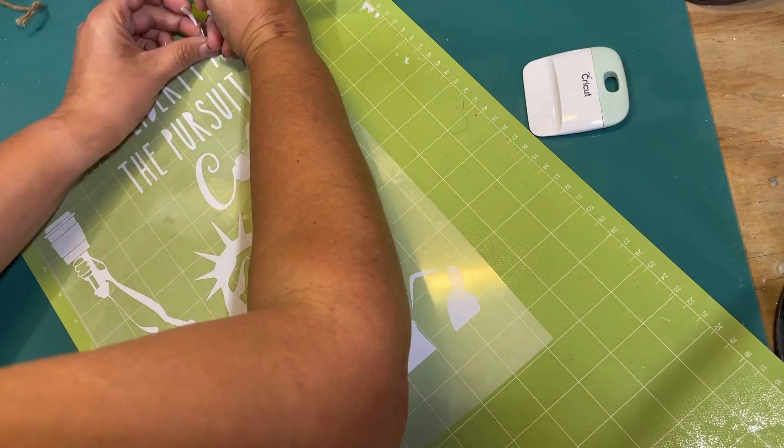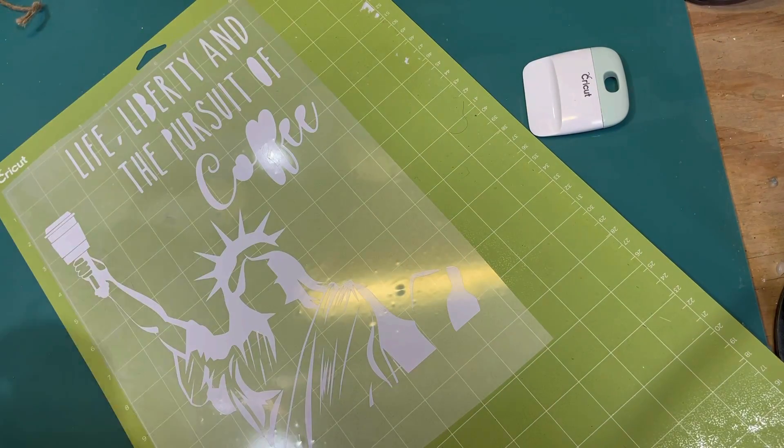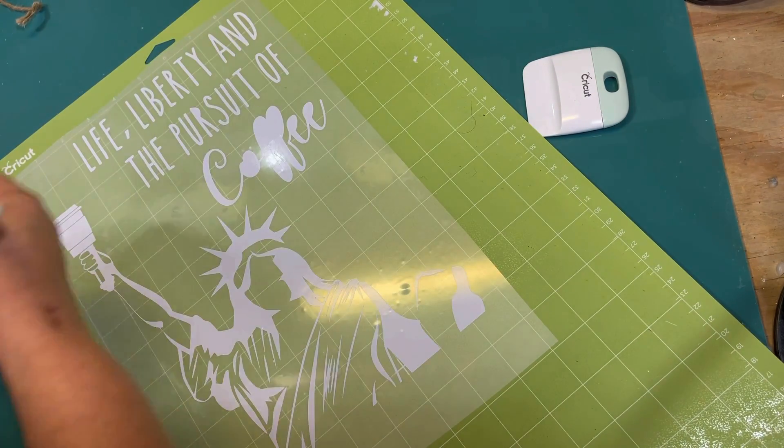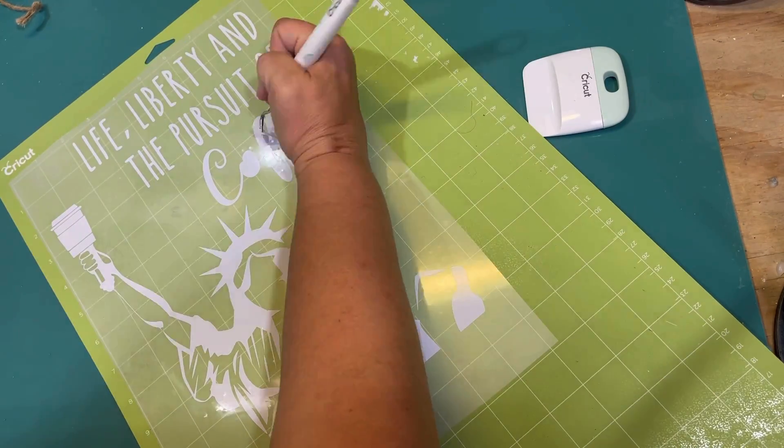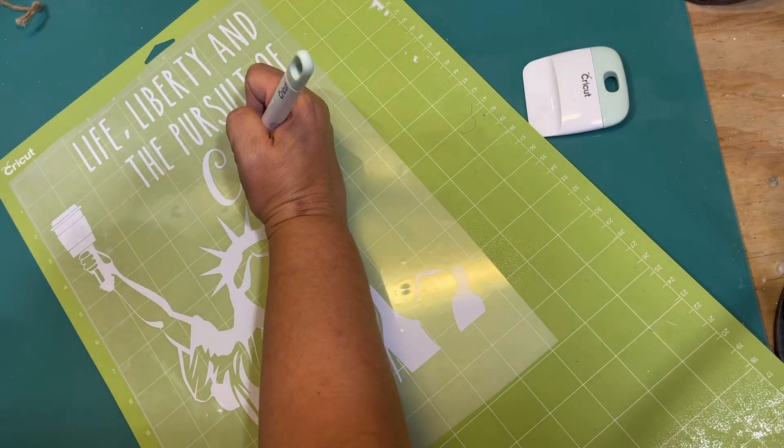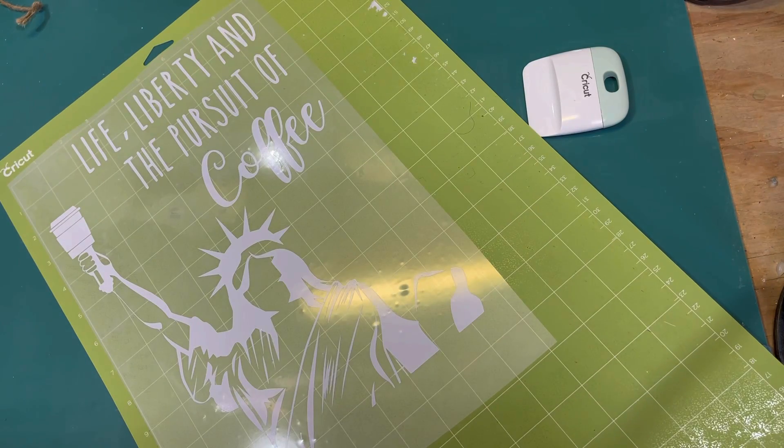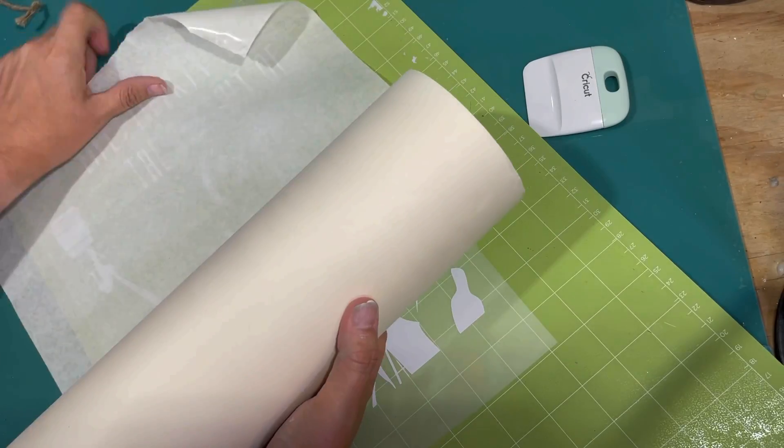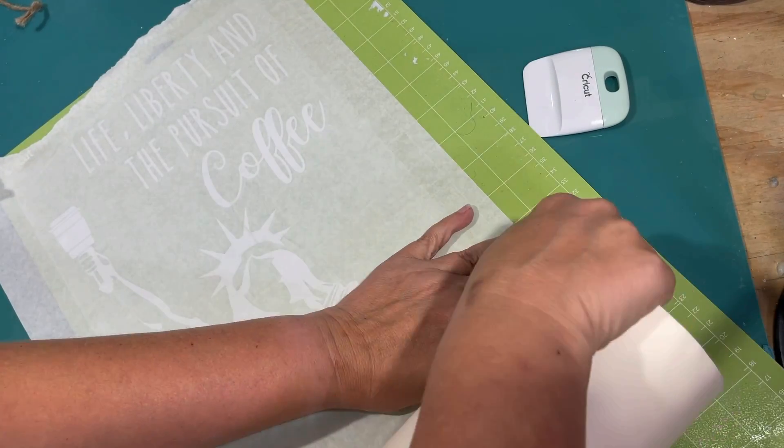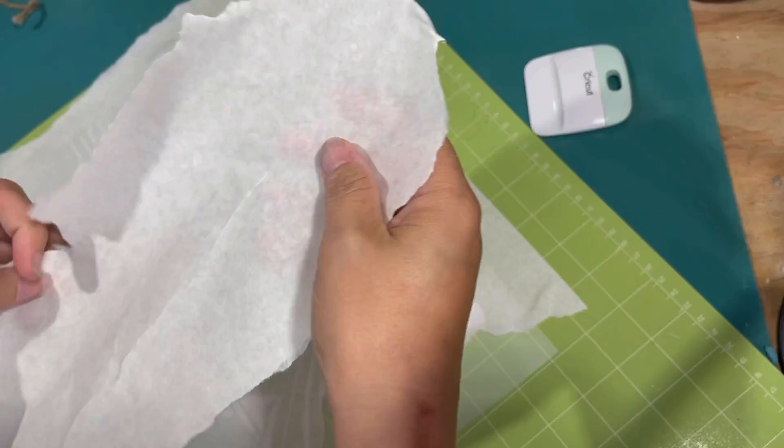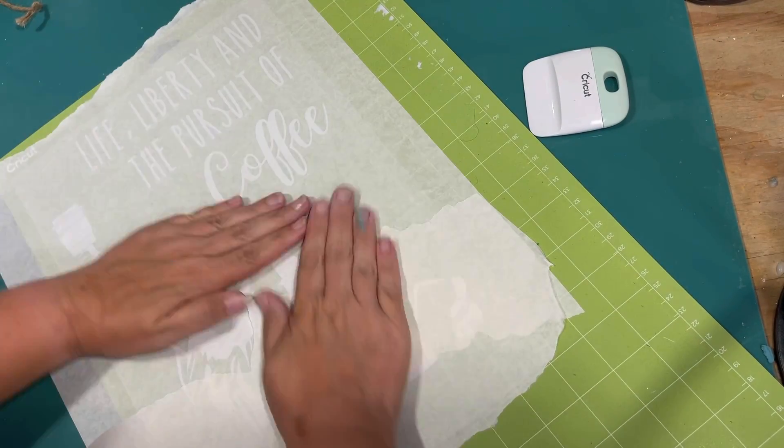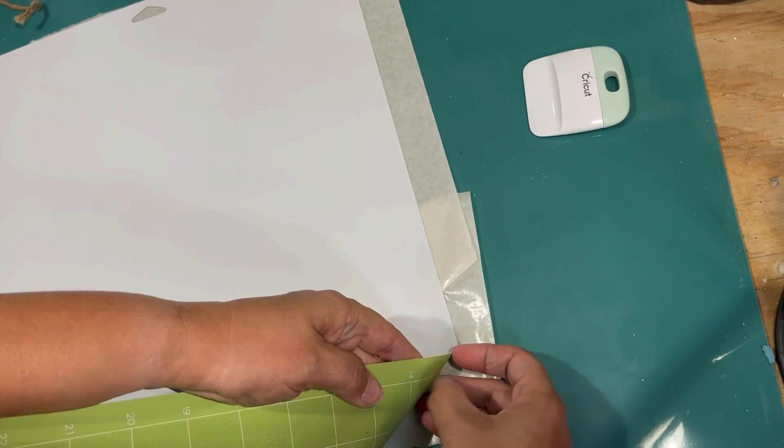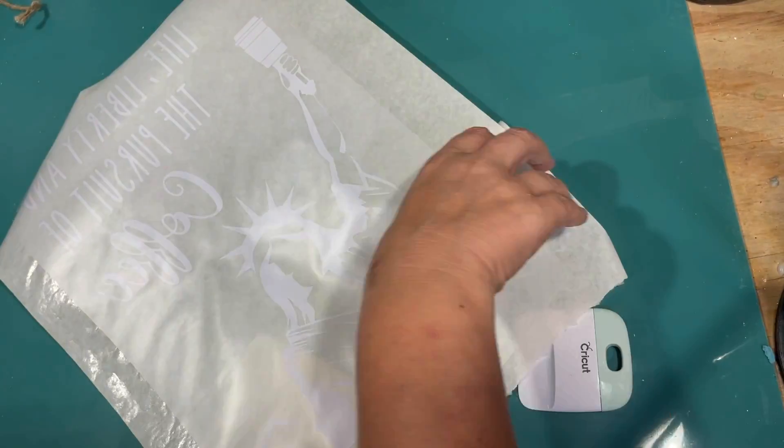So basically it is the Statue of Liberty. And then I did Life, Liberty, and the Pursuit of Coffee. And I thought that was funny. And it changed her torch into a to-go coffee cup. So that's the way I am taking myself to work every day is with that coffee cup in my hand for sure. So I am just going through and weeding out all of the middle pieces there. And I'm just going to apply the white vinyl straight to the sign.